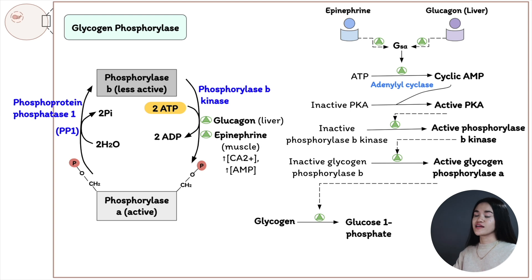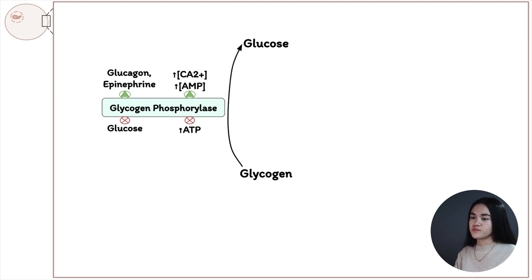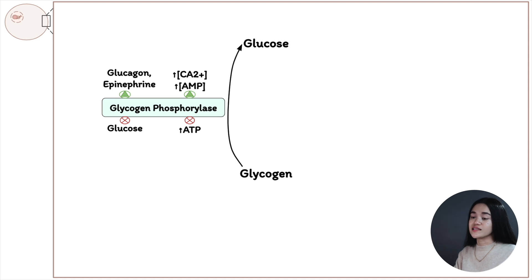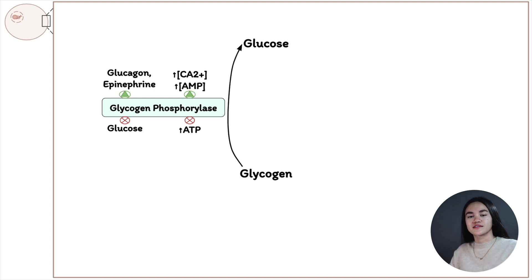To summarize, glycogen phosphorylase is regulated both hormonally — by phosphorylation and dephosphorylation — and allosterically. The dephosphorylated form is inactive; the phosphorylated form is active. When blood glucose drops, glucagon activates phosphorylase b kinase, converting phosphorylase b to phosphorylase a, which breaks down glycogen to release free glucose. When blood glucose returns to normal, glucose binds to an inhibitory allosteric site on phosphorylase a, leading to dephosphorylation and inactivation.